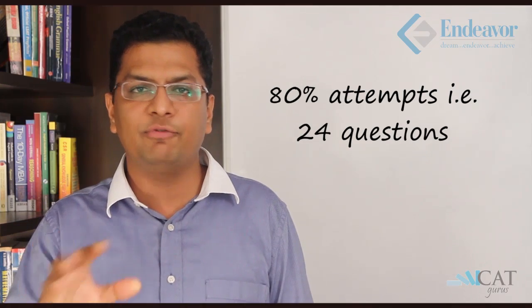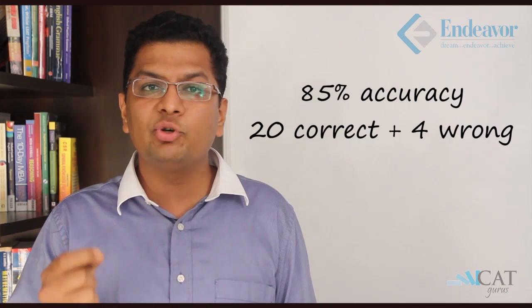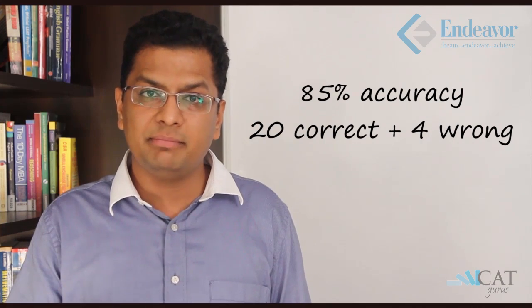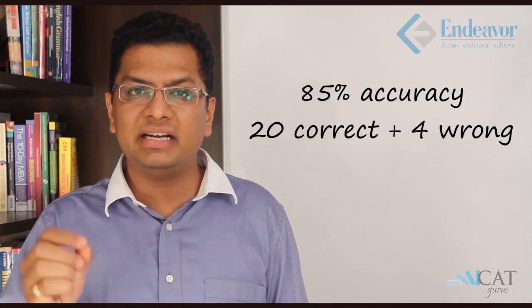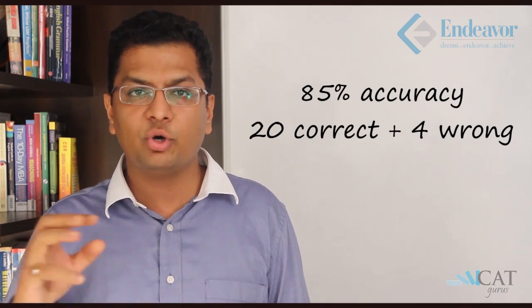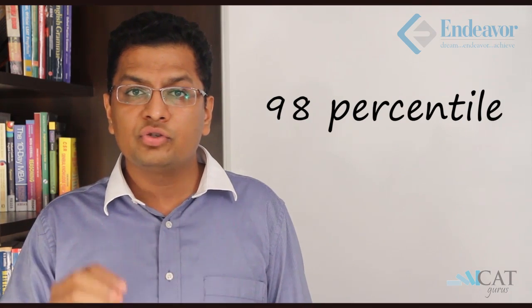But how do we go ahead? If I look, 30 questions are there. If you attempt 80% of the questions, which is 24 questions, with an accuracy of 85%, this will give you 20 correct questions. So 24 questions you've attempted with an accuracy of 85% which is somewhere around 20 point something. Let's take 20 questions you've got right, 4 questions you've got wrong. This will fetch you a 98 percentile in that section. Normally. Even after doing all of this, if I attempt only 24 and get 20 right, I am able to clear the cutoff of almost all the colleges.